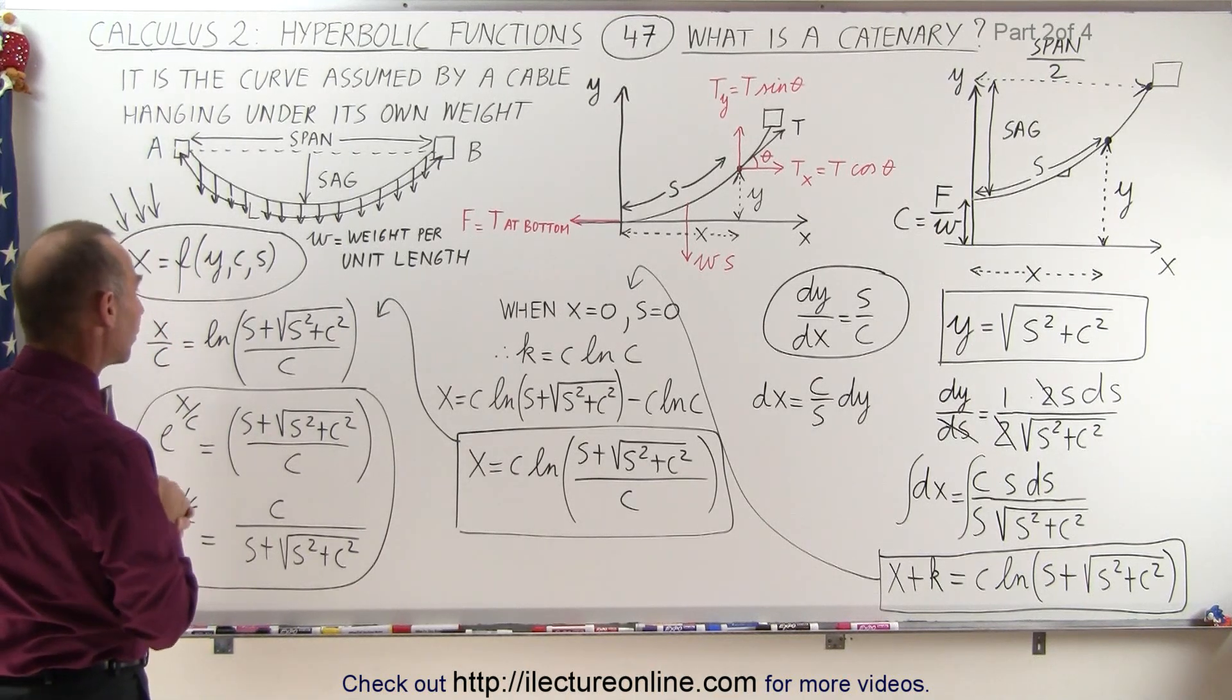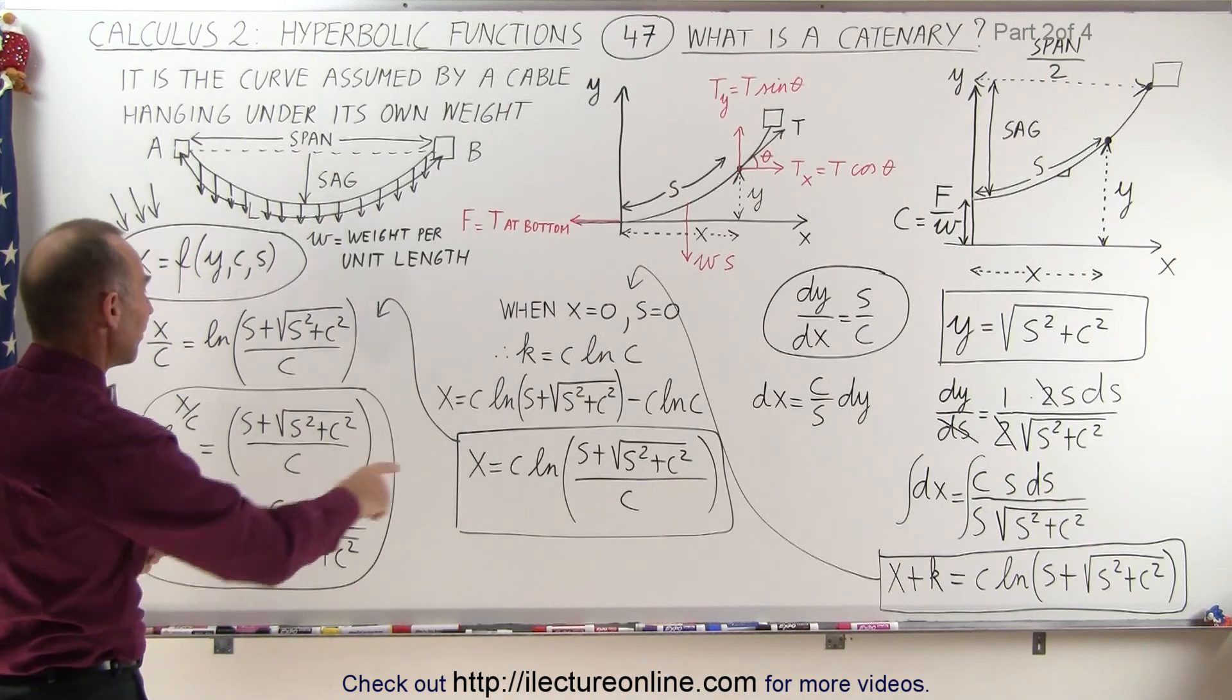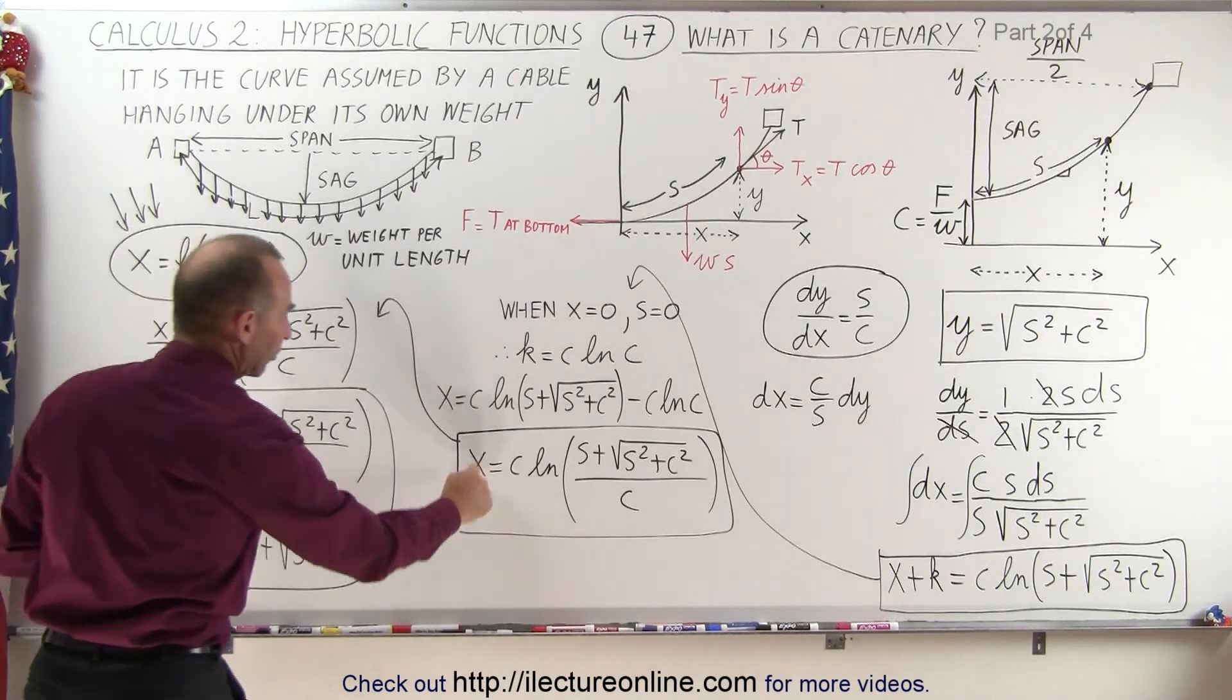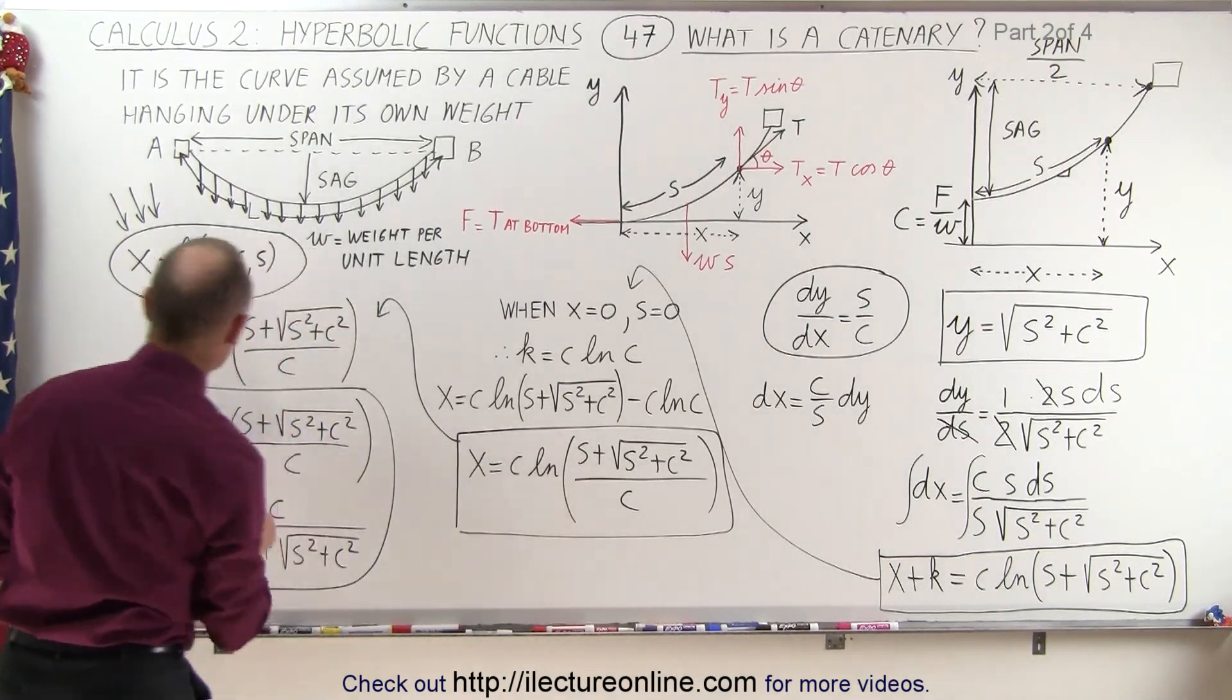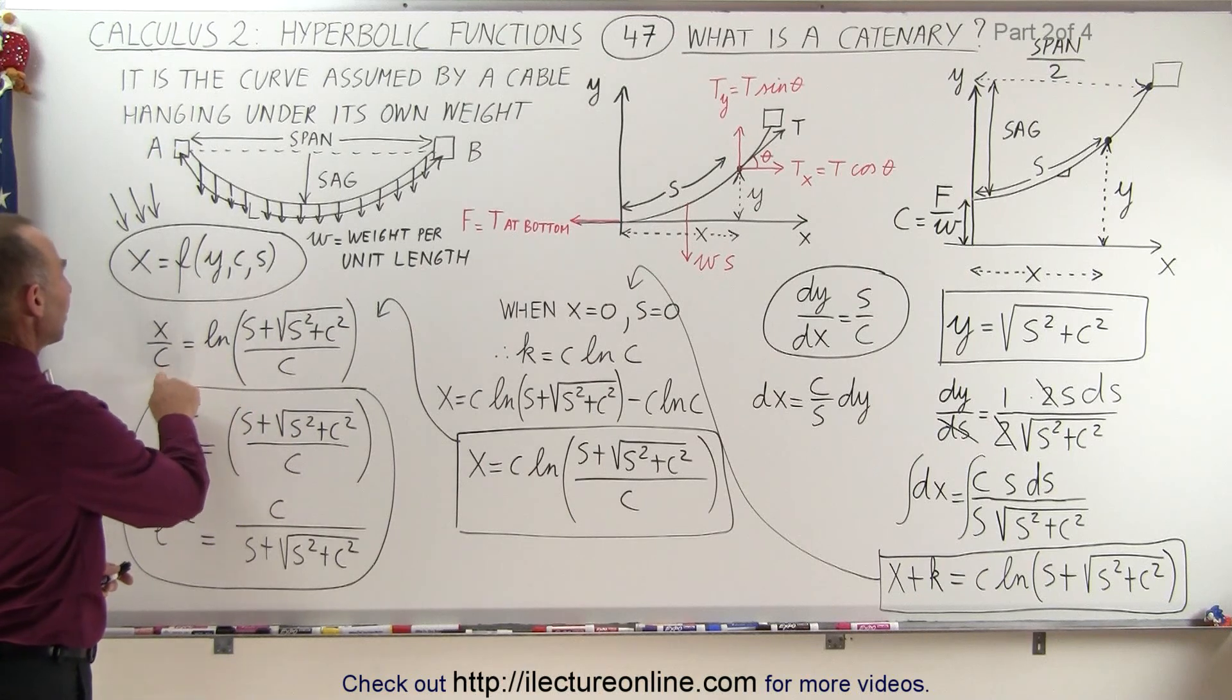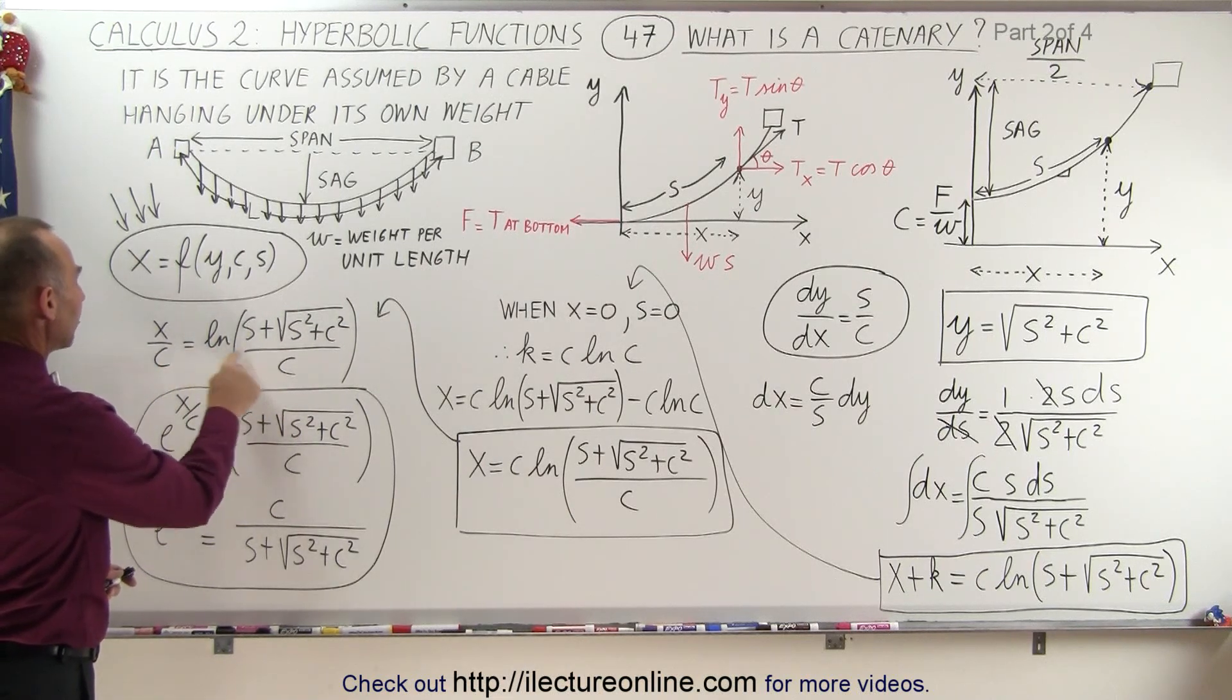Next what we're going to do is we're going to divide both sides by c. So x over c is equal to the natural log of that. At this point, what we're going to do is we're going to take the anti-log of both sides.